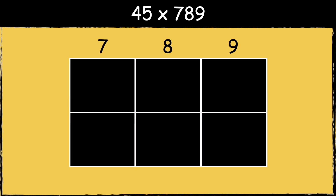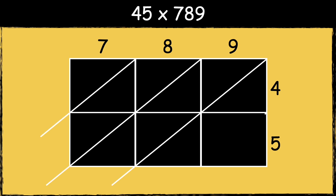Here is the last example: 45 multiplied by 789. First we draw the grid. We put 789 along the top and 45 down the side. Next draw your diagonal lines going through the boxes.